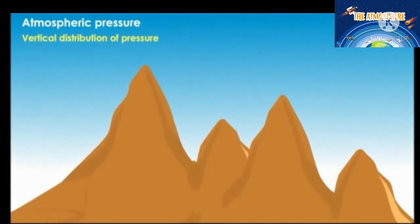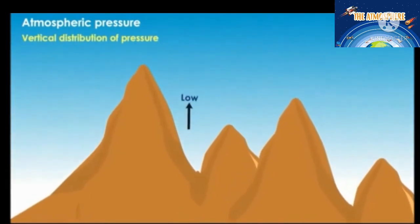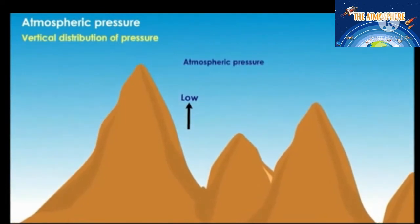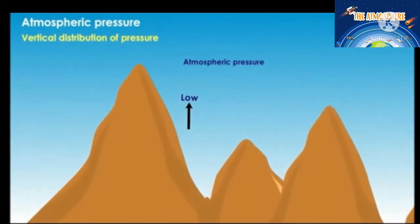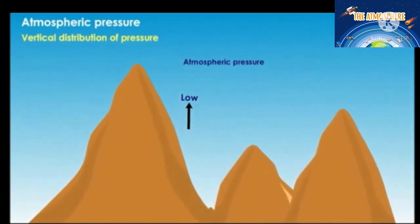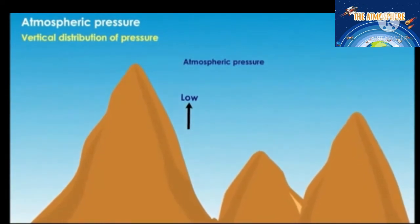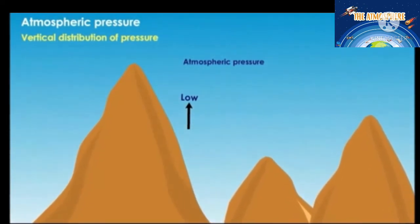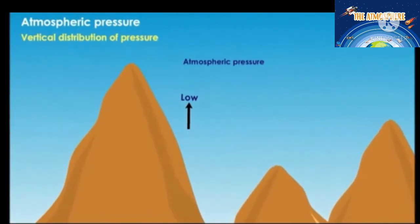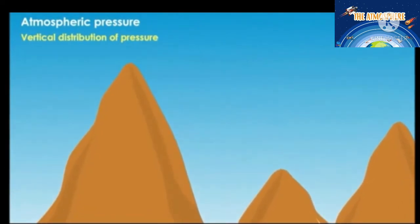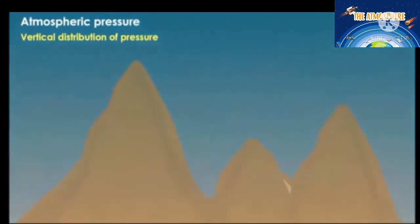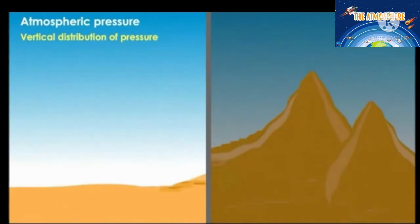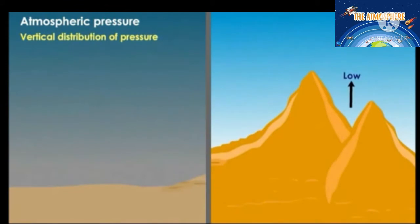Vertical distribution of pressure: atmospheric pressure decreases with height. As we go up, the atmosphere becomes thinner and thinner, and its pressure also decreases. This is the reason why high pressure is found at sea level due to dense atmosphere. The lower areas and plains have high pressure, but on the mountain the pressure becomes low.